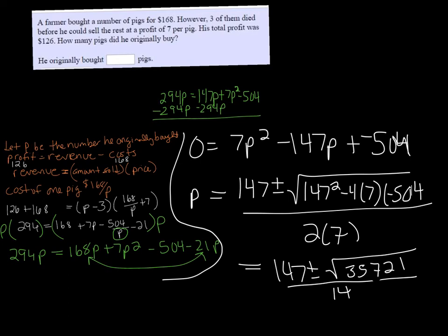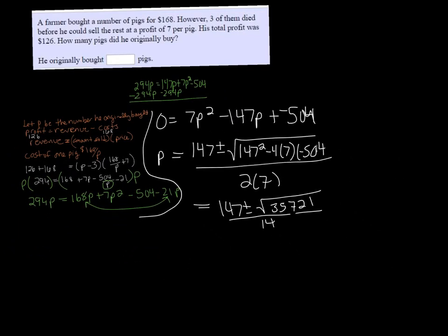If we take the square root of that, it's 189. So we have 147 plus or minus 189 over 14.